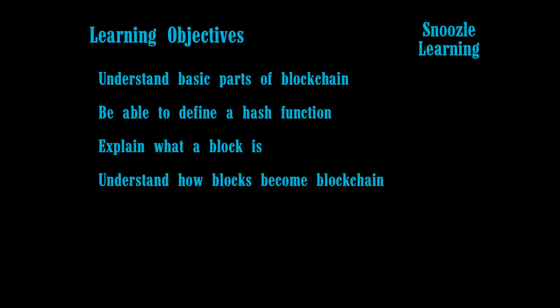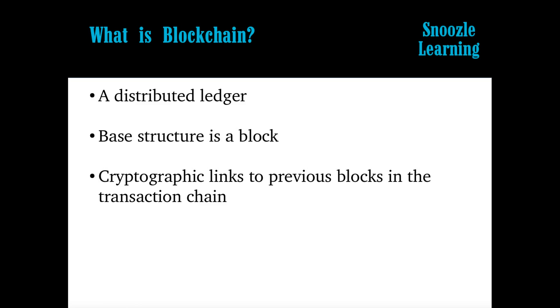So blockchain is the kind of the basis of Bitcoin and also Ethereum and stuff like that, so cryptocurrencies for the most part. And so for this we're going to basically go over the understanding of the basic parts of blockchain, be able to identify a hash function, be able to explain what a block is, and also understand how blocks become a blockchain. And so we'll be talking about distributed ledgers, the basic structure of a block, and then how you cryptographically link to previous blocks in the transaction chain.